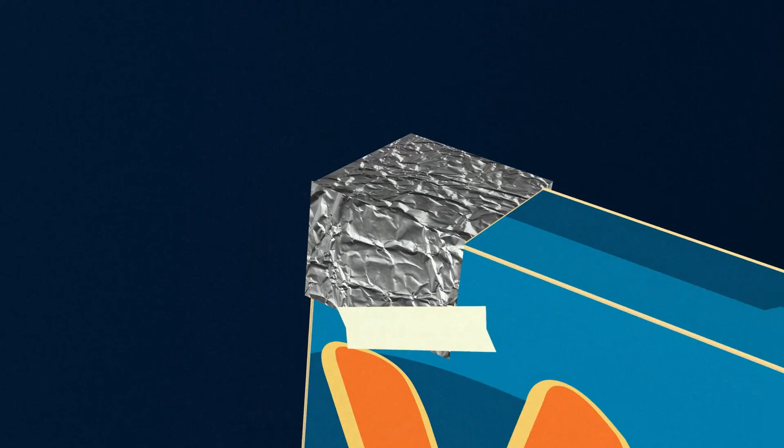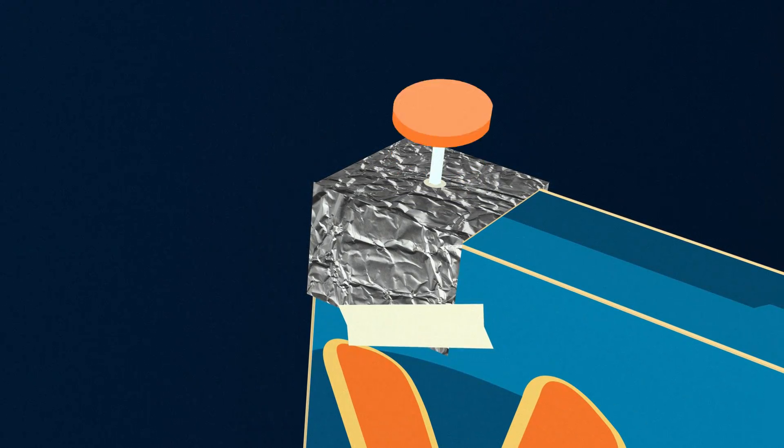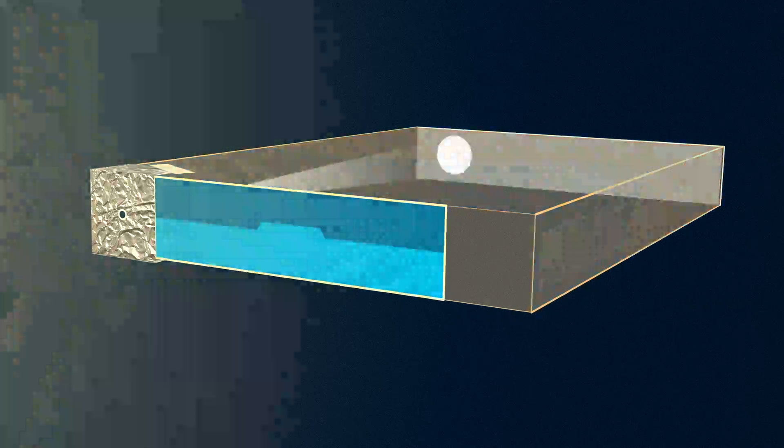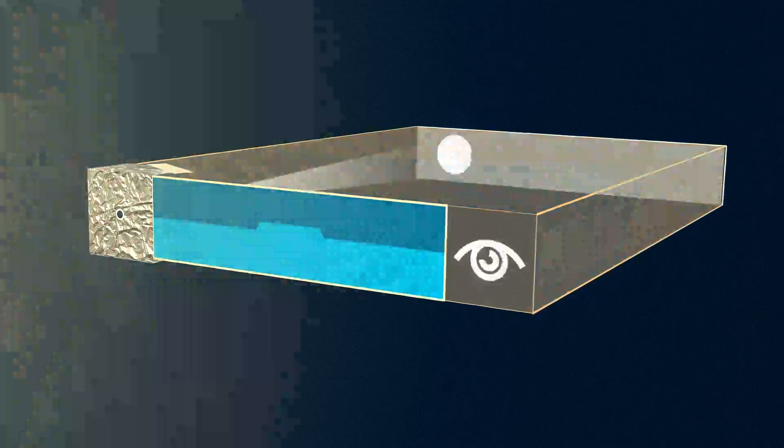Step 5: Poke a pinhole in the center of the foil. And finally, turn your back to the sun and look into the right hole.